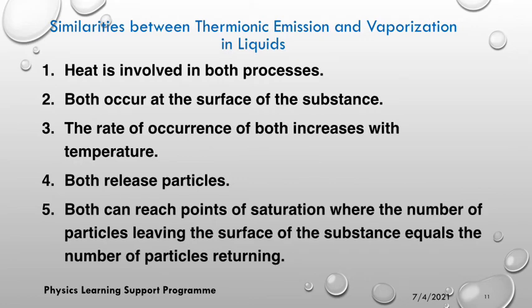Another very important aspect of this topic is the similarity between thermionic emission and vaporization in liquids. Vaporization is when a liquid changes to gas. Similarities: number one, heat is involved in both processes. Both occur at the surface of a substance — vaporization occurs at the surface, it is molecules at the surface of a liquid that get to escape. Under thermionic emission also, it is the surface of the metal that the electrons are released from. The rate of occurrence of both increases with temperature — if the temperature of the metal increases, you will have more electrons being released.